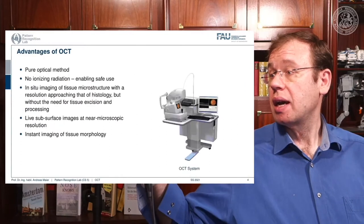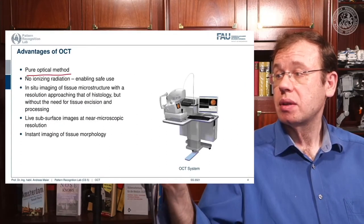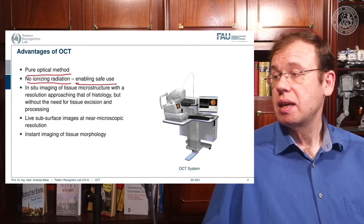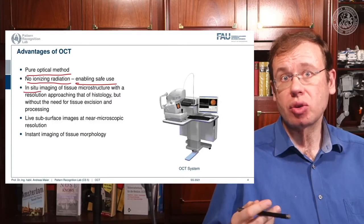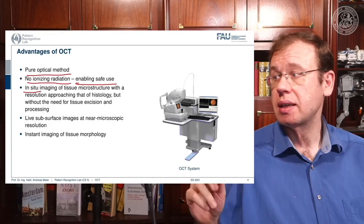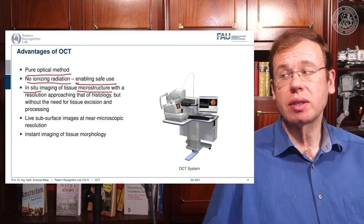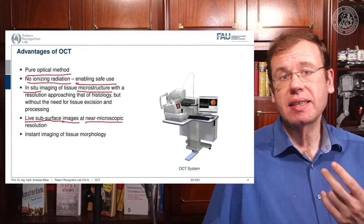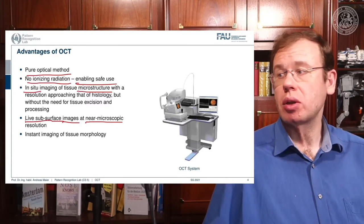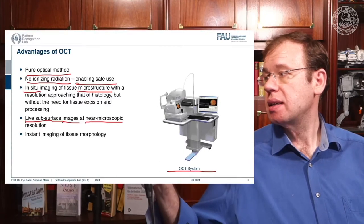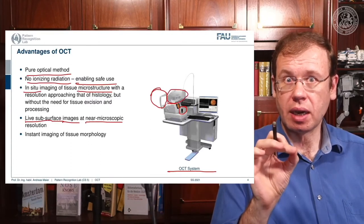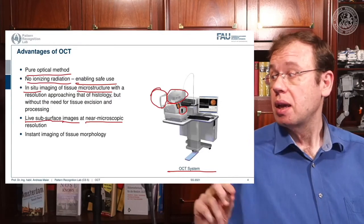The advantages of OCT: it's a pure optical method with no ionizing radiation — essentially all optical light — so it's safe for use. You do in-situ imaging, directly imaging the tissue without operating on the eye or extracting tissue. You get microstructure at very high resolution, live subsurface images at near-microscopic resolution, and instant imaging of tissue morphology. Here you see an OCT system where the patient positions their head and the operator aligns the imaging device with the optical axis of the eye.